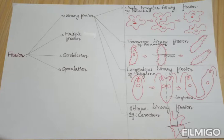First, we are going to learn about simple irregular binary fission. This type of binary fission is seen in irregular shaped organisms where the plane of division is hard to observe. You can see this in organisms that don't have a definite body shape. Example: amoeba.